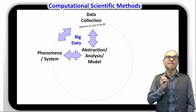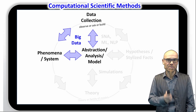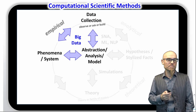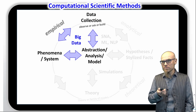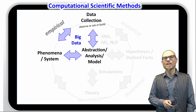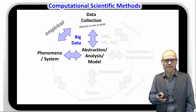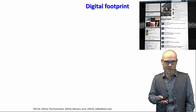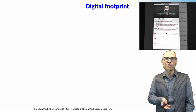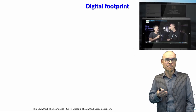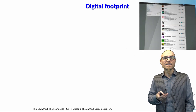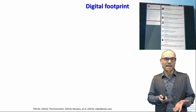We start here in the upper left corner with the empirical work, which in computational social science is big data — often the digital footprint that we have. The digital footprint is really a footprint we leave behind. For example, with Twitter, we just take this kind of data and try to answer social science questions.